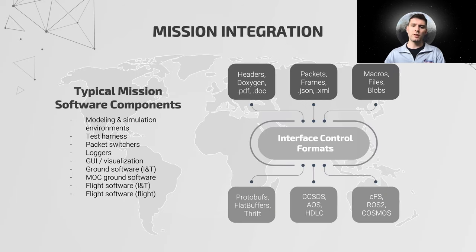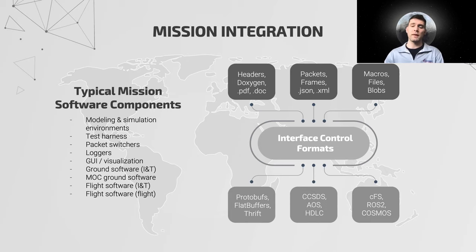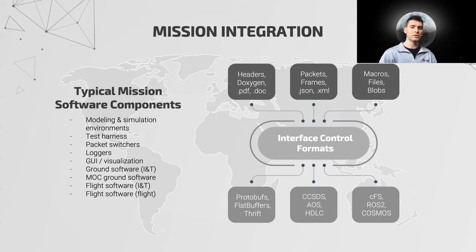The numerous heterogeneous components of a typical mission result in many different representations of telemetry and command data, with each representation requiring a management system and associated translation layers. Maintaining these by hand is time-consuming and prone to human error. However, the relationships between these representations and the structure of their translation layers can typically be encapsulated in a few concise rules, making them ideal candidates for code generation.